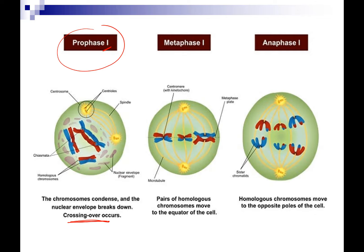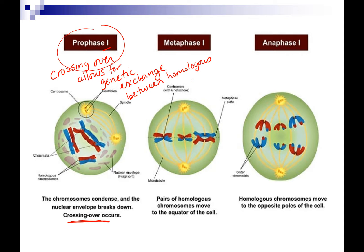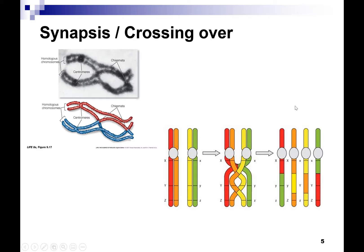Crossing over allows for genetic exchange between homologous chromosomes — a genetic exchange between the mom and dad, or the maternal and paternal chromosomes. This is very unique to meiosis; it happens in prophase one. And what you can see is the tips of some of these chromosomes are different because they have exchanged genetic material.